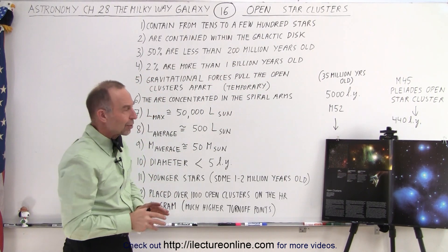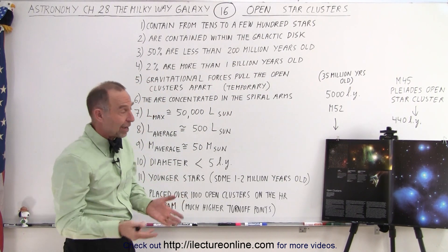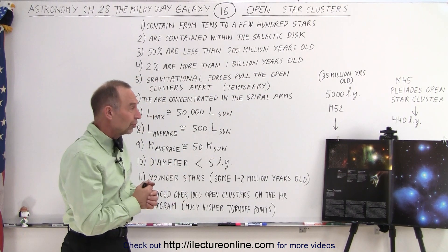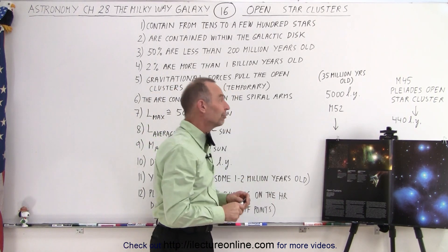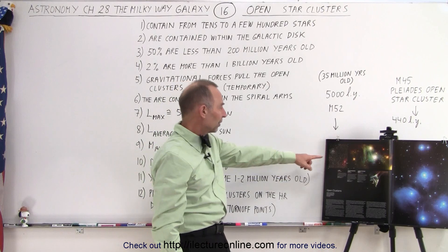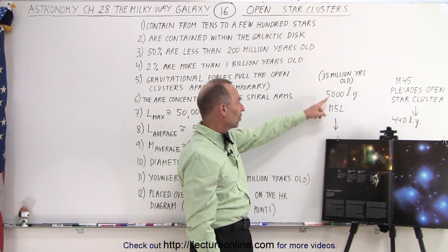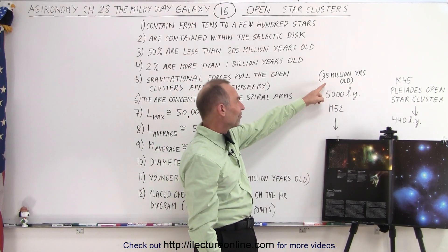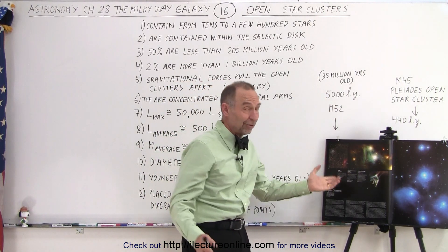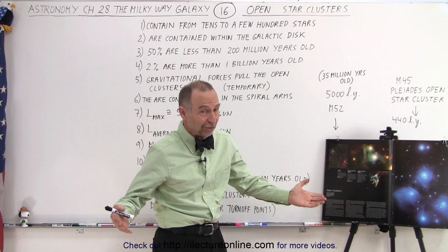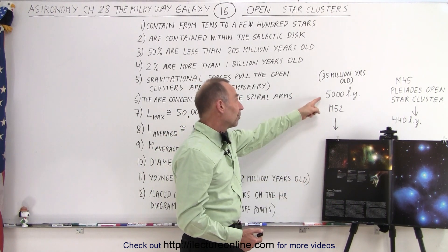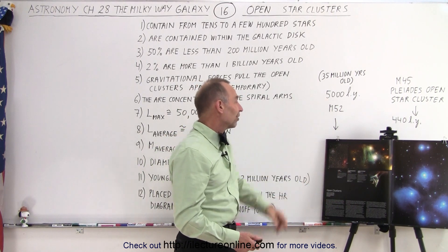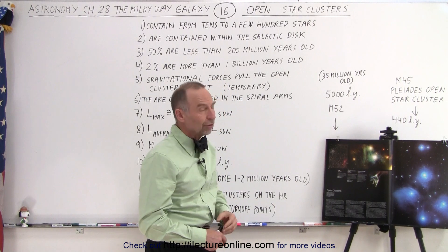Earlier in the year, January and February is a much better time to go see the Pleiades star cluster. Again, it's a young cluster, about 440 light years away. Another picture here is a 35 million year old cluster — and 35 million years is very, very young for anything in the universe. It's about 5,000 light years away and it's known as M52.